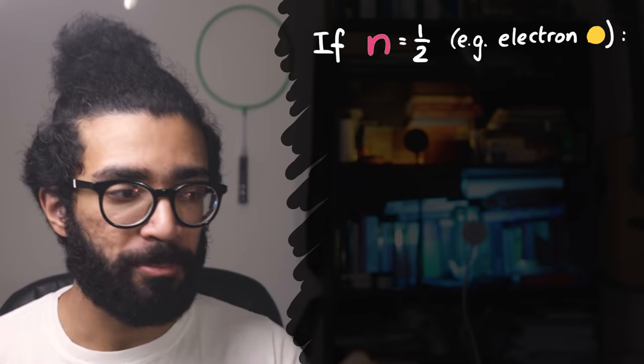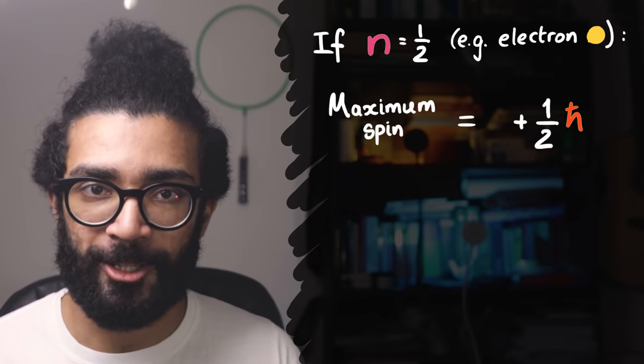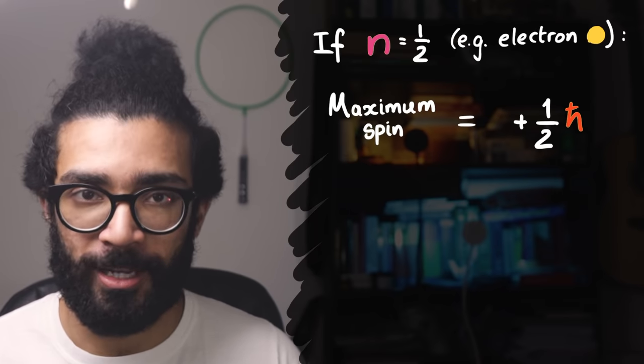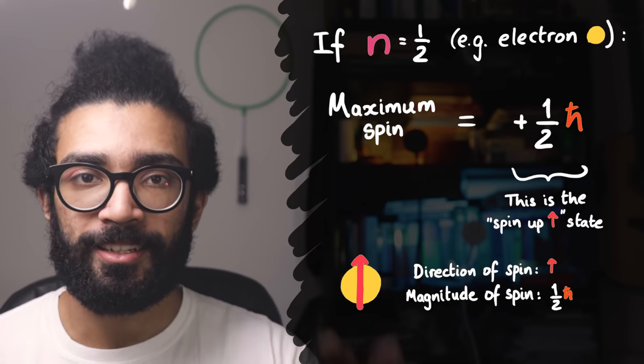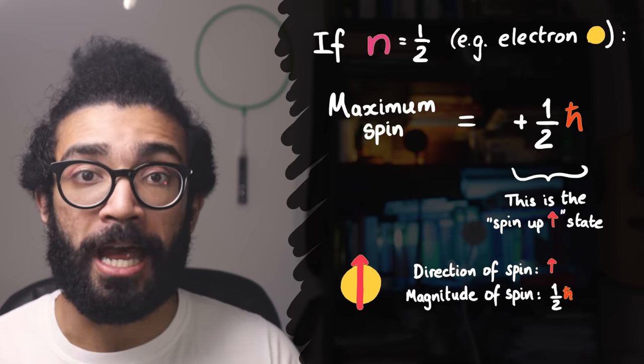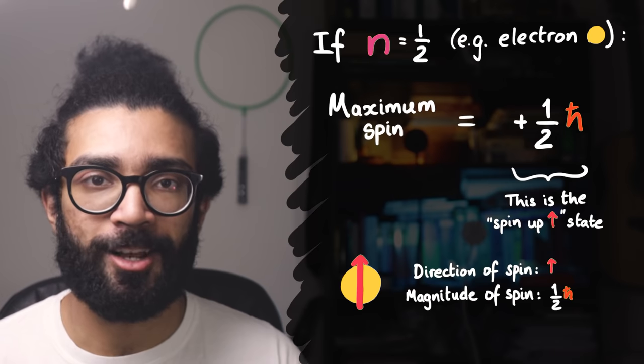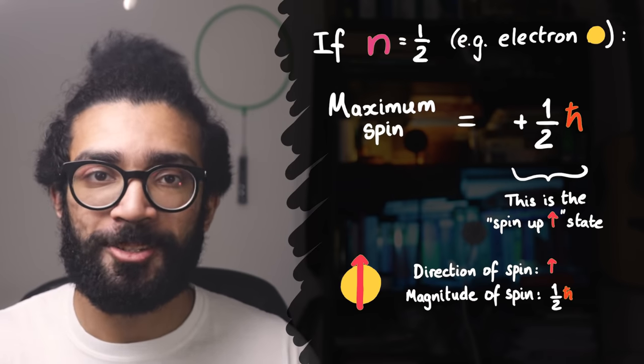So a spin half particle can be found with a maximum spin angular momentum of one half multiplied by h-bar. But interestingly, we can also use this number to figure out how many possible spin states our particle can have. The way to do this is the following.